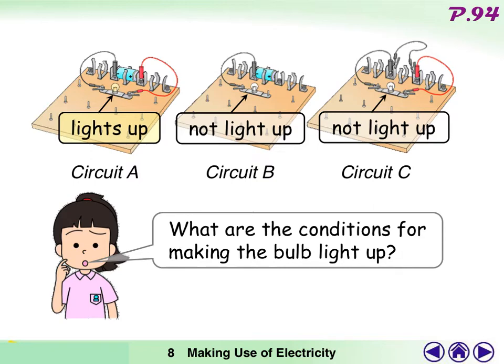In this slide, we have three circuits, circuit A, B, and C. The bulb only lights up in circuit A. The bulb in circuit B and C do not light up. So, what are the conditions for making the bulb light up? You can pause the video and try to find the differences between circuit A, B, and C.